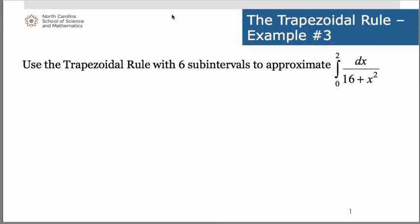Let's take a look at an example of how to use the trapezoidal rule to approximate the area under the curve of the function 1 divided by the quantity 16 plus x squared on the interval from 0 to 2.